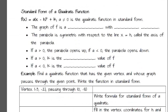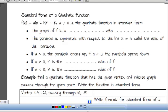What else do we learn from the standard form of the quadratic function? The graph of F is a parabola with vertex at H, K. That's the vertex of our graph at coordinates H, K when it's in this form. Notice the form has a minus sign built in, so when we have minus there, the vertex is H, K. If we have plus there, it's going to be negative H, K. The parabola is symmetric with respect to the line X equals H, called the axis of the parabola. If A is greater than zero, the parabola opens up; if less than zero, it opens down.